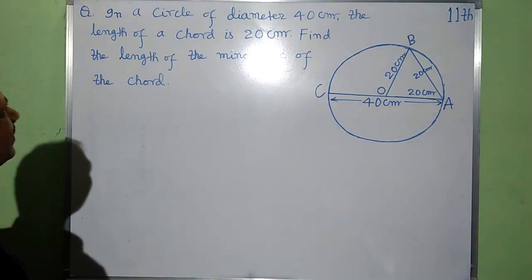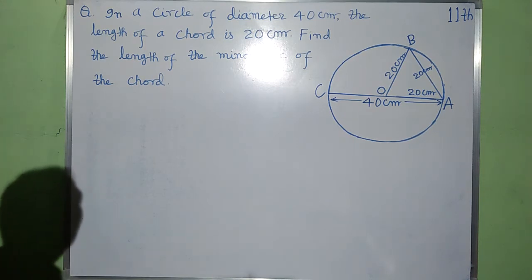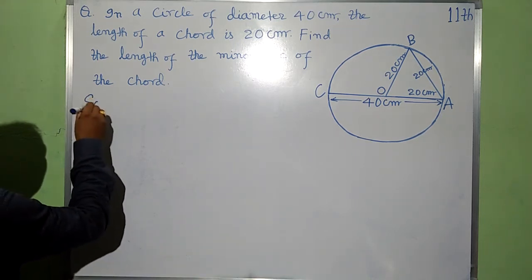Question runs like this. In a circle of diameter 40 cm, the length of a chord is 20 cm. Find the length of the minor arc of the chord.